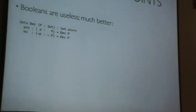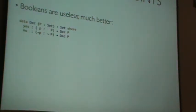Some other minor points, miscellaneous things. Booleans in this kind of language are useless. You have typically a type that looks like this. It's dec, super decidable.